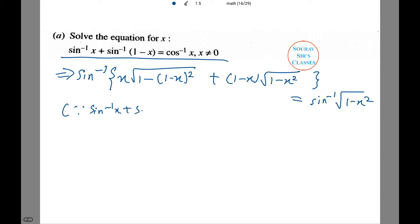This happens since sin inverse of x plus sin inverse of y equals sin inverse of x times square root of 1 minus y squared plus y times square root of 1 minus x squared. And cos inverse of x equals sin inverse of square root of 1 minus x squared.